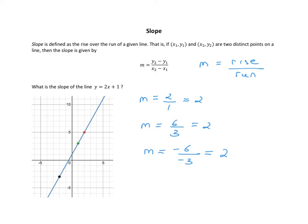So every line has slope, and you can use any two points on the line to figure out what it is. Slope itself is telling you whether your line is increasing or decreasing, and how much it's increasing or decreasing. Here we got that slope was positive 2. The fact that it's positive means that your line is going up. Had we gotten a negative slope, our line would have been going down. The bigger the number is, the steeper the line — if the slope happened to be 3, you'd have a steeper line than if your slope is 2.